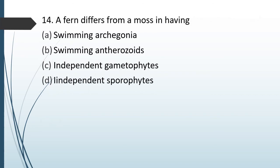Question No. 93: A fern differs from a moss in having — Option A: Swimming archegonia. Option B: Swimming antherozoids. Option C: Independent gametophyte. Option D: Independent sporophyte. The correct answer is Option D — independent sporophyte.